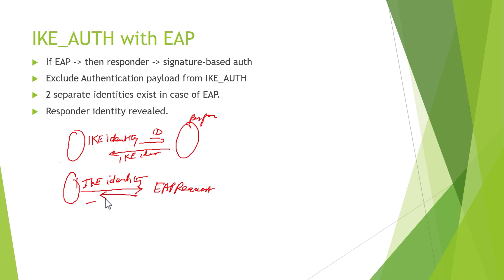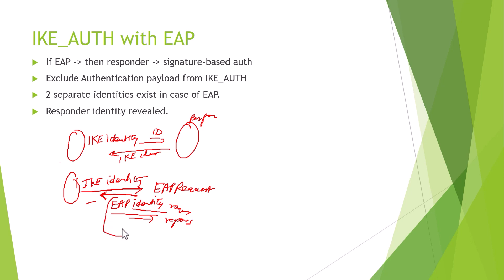The responder sends an EAP request message to the initiator, asking for an EAP identity. Now the IKE_AUTH exchange pauses temporarily. An EAP identity request is sent, then an EAP identity response comes back from the initiator. Then validation happens. When EAP validates and confirms the identity is valid, the final output comes back from the responder to the initiator: your validation is done, identity confirmed, good to go. So in the EAP case, two identities are used: the IKE identity is the primary identity, and the EAP identity is used as the second identity — the EAP identity is what is actually used for the main authentication.